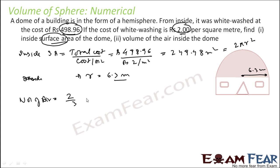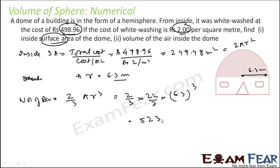Once we have the radius, we can easily find the volume of air. Volume of air for a hemisphere is 2/3 πr³. Putting in the values: 2/3 × 22/7 × (6.3)³, you get 523.9 cubic meters. That is the volume of air inside the dome.